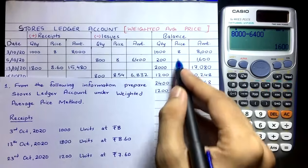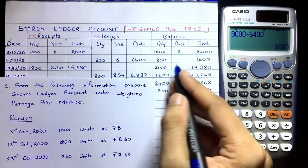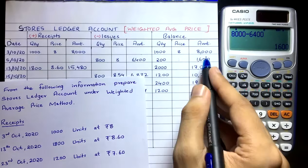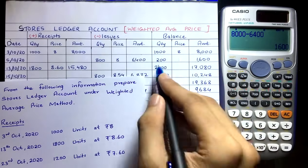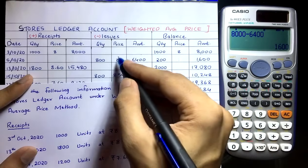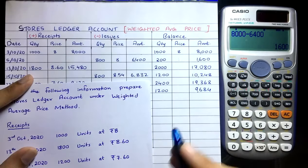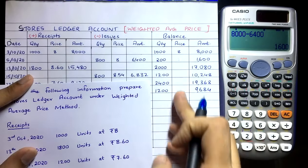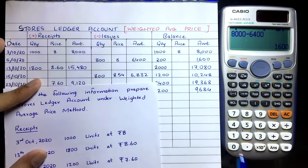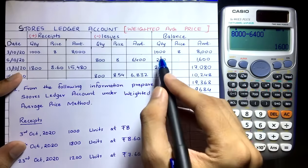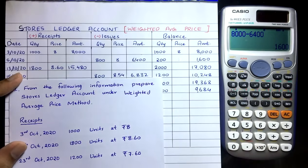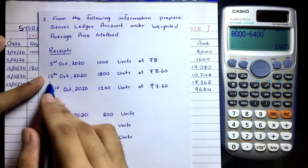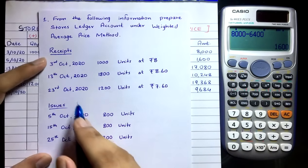Each time we make an issue, we calculate weighted average price as total cost ÷ total quantity and issue at that price. The prices in the balance column are irrelevant, so leave them empty. After the 5th October issue, we have 200 quantity costing ₹1,600 remaining in the warehouse.